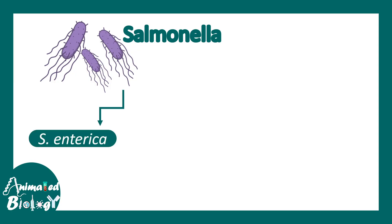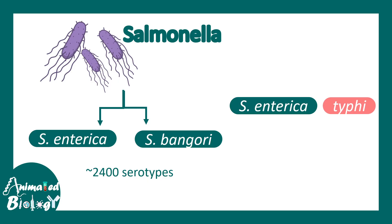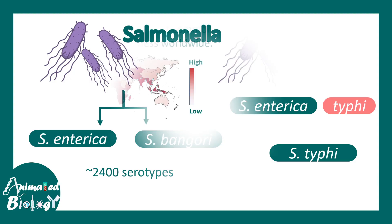Salmonella is subdivided into two major species: S. enterica and S. bongori, and it has more than 2,400 serotypes. Generally, people confuse the name of the serotypes with the subspecies. S. enterica has a serotype known as typhi, which people generally call Salmonella typhi, and this is one of the most common causes of Salmonellosis.